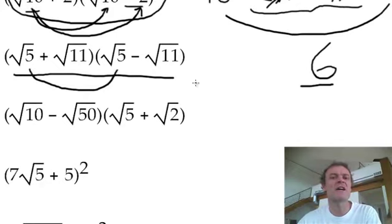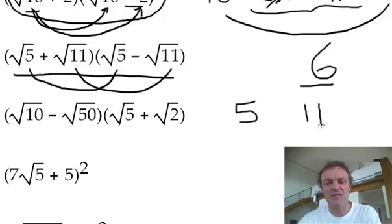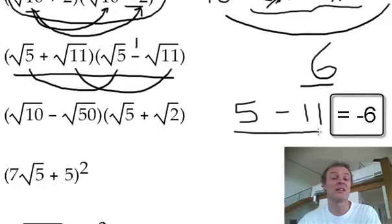What's 5? Root 5 times root 5 is 5. What's root 11 times root 11? It's just 11. It's got the minus in it. So to me, that's all I need to do. Because I can see that the outer and the inner will cancel.